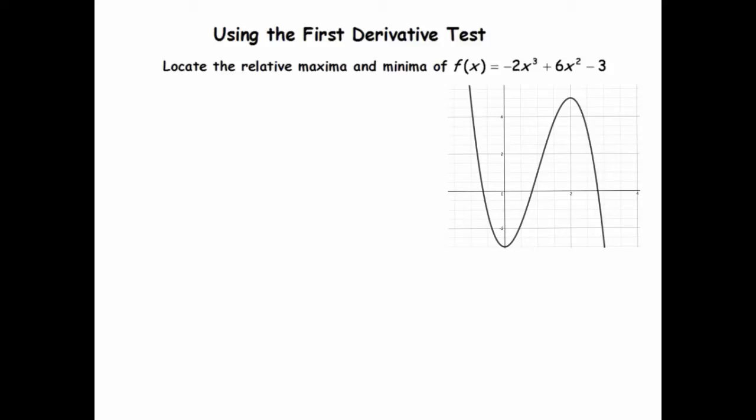So we've got this cubic, negative 2x cubed plus 6x squared minus 3, and the first thing we'll want to do is to take its derivative so we can get information about where it's increasing and decreasing. So that's going to be negative 6x squared plus 12x, which I can factor into, I think I can take out a 2x, so I get 2x times negative 3x plus 6.